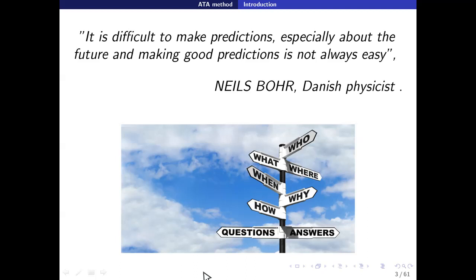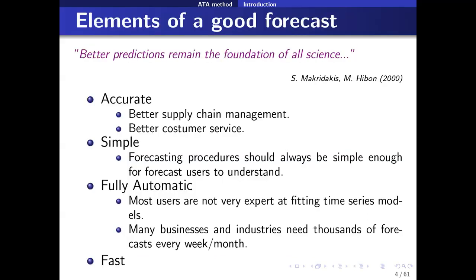Making good predictions about the future is a very hard task because most of the time there is a lot of uncertainty involved, and this is very important for almost all fields of science. When we say a good forecast, we mean that it should be accurate, simple to obtain, fully automatic because not all users will be experts in time series modeling, and fast to obtain because there will be a lot of data coming in.